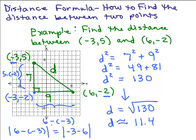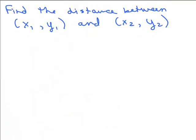We're going to use these ideas to get a formula using variables for your points. If we have x1, y1 we're going to use the same ideas and the Pythagorean Theorem to get a distance formula. The problem is: find the distance between x1, y1 and x2, y2. I really don't know where those are in the plane — x1, y1 could be to the right of x2, y2 — so I have to be careful, because it might not look exactly like my diagram.